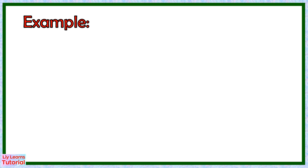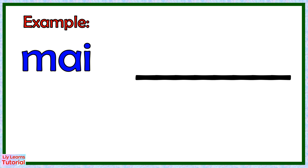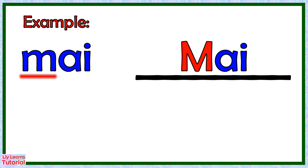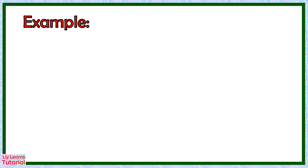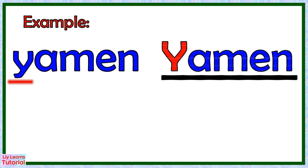Let's write these names of people correctly. For example, May. We write the first letter, which is M, in capital letter. We saw May at school. Yaman begins with capital letter Y.